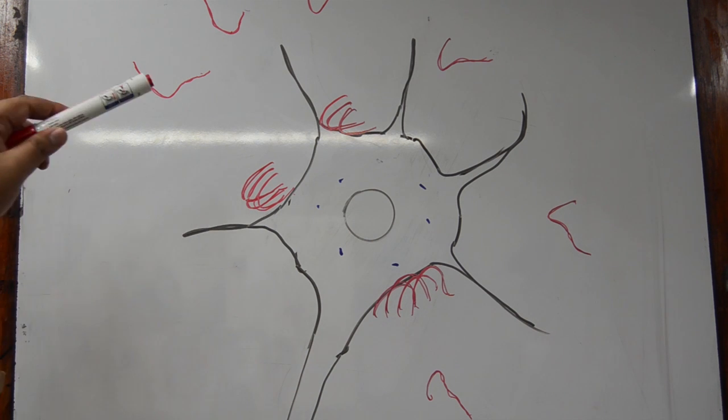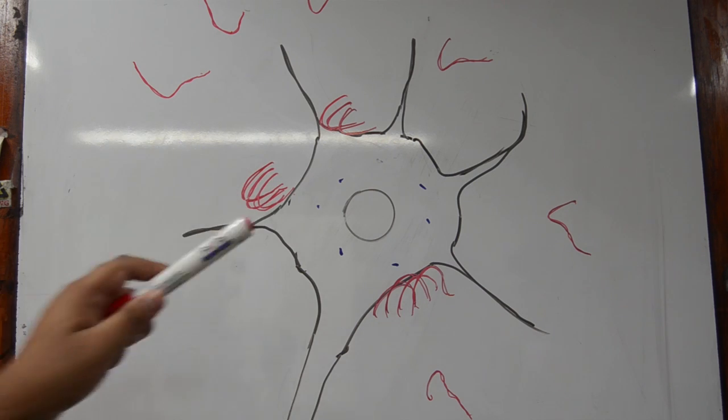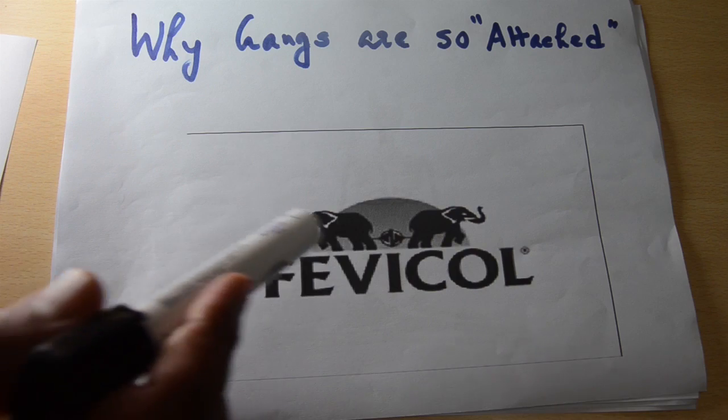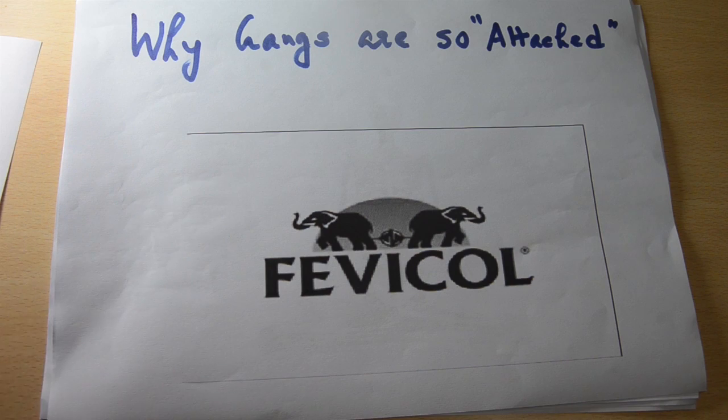And this is probably one of the reasons why these oligomers might be toxic to the nerve cell. Why are gangs so attached to the neuron membrane?